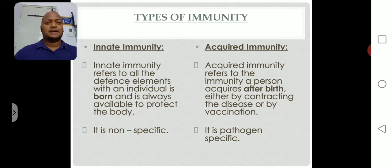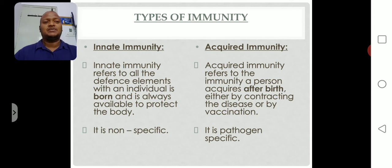Next is acquired immunity. Acquired immunity refers to the immunity a person acquires after birth, either by contracting a disease or by vaccination. So whatever immunity the person gets after birth, that type of immunity is called acquired immunity.